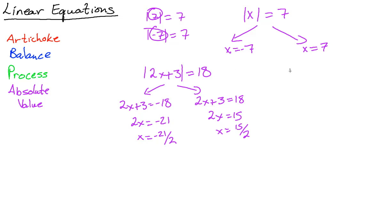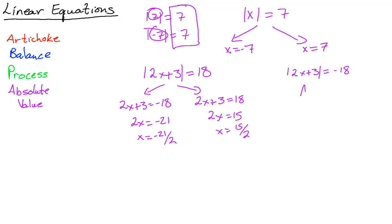What if we had |2x + 3| = −18? That's not good. Absolute value always turns everything positive — this expression is positive no matter what you stick in for x. A positive equaling a negative: no solution. That's the concept of absolute value you must not miss.